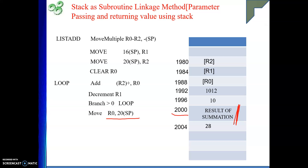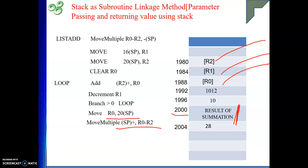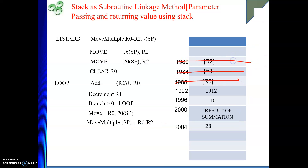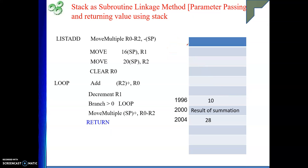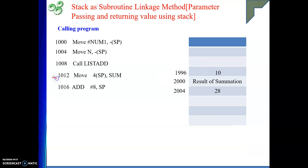Then we restore the saved registers: MOVE MULTIPLE pop R0, R1, R2 back in reverse order so each value goes to the correct register. After this pop, SP is back at 1992 and the return address 1012 is on top of the stack. We execute RETURN — one implicit pop loads 1012 into PC — and control returns to the caller at address 1012.